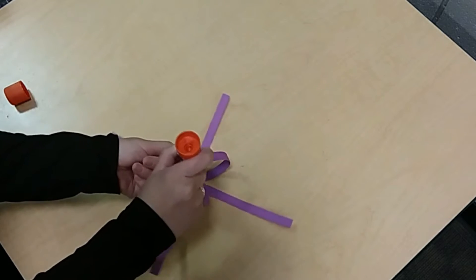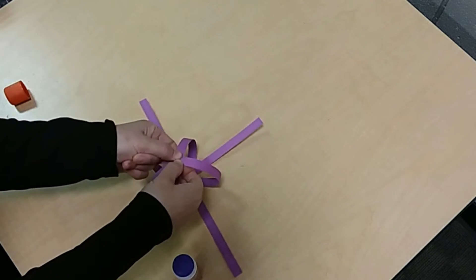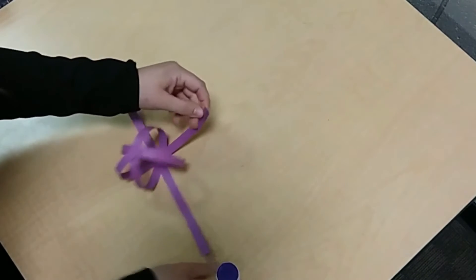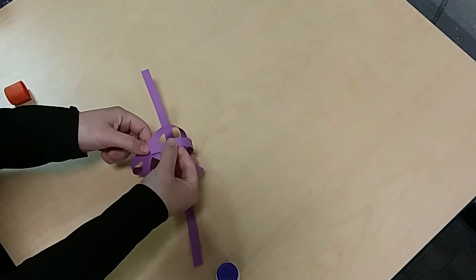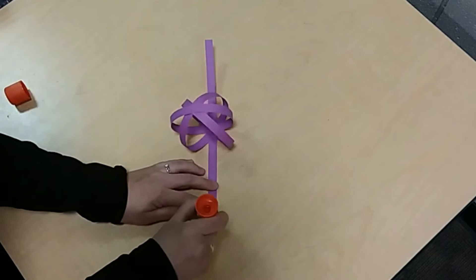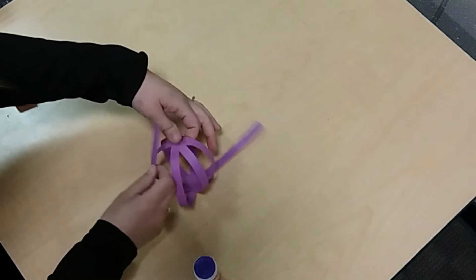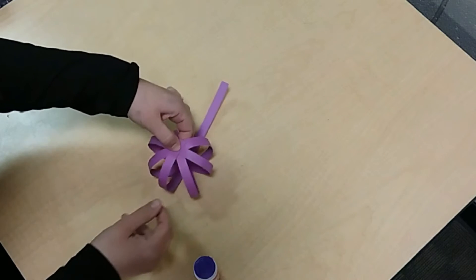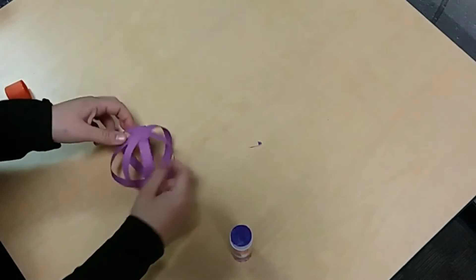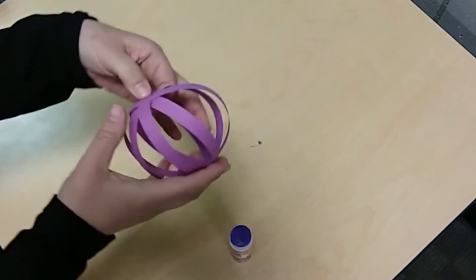Put more glue in the middle. You can glue the ends or in the middle, whichever is easier for you. Make sure you press down after each one. And last one. All right, now we have the bottom part of that bunny like a snowman.